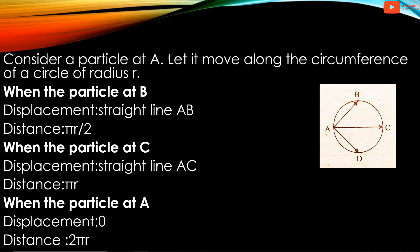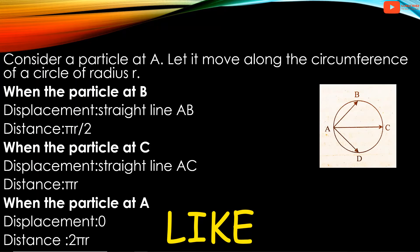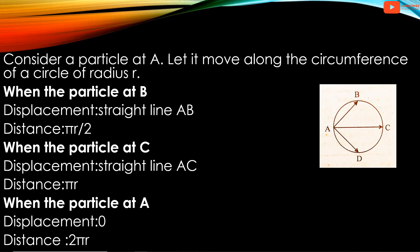Consider a particle at A. Let it move along the circumference of a circle of radius R. When the particle is at B, the distance traveled is pi*R divided by 2, because the circumference of the circle is 2*pi*R and the particle has traveled one quarter of it. The displacement is the straight line AB — the shortest distance between the initial point and final point.